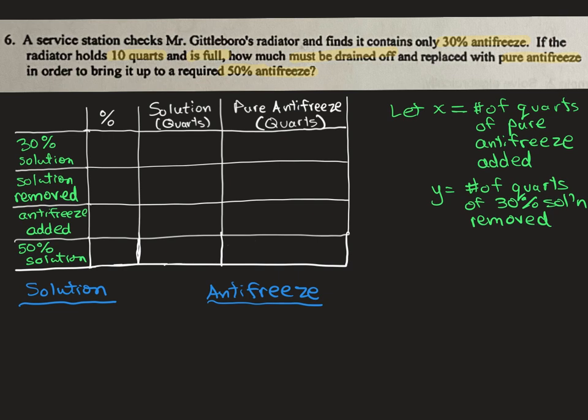So I set up a table here to kind of demonstrate the different stages of the antifreeze escapade. So 30% solution is kind of what we started with. The first column I have here is what that would be as a decimal, so 0.3. And the amount of solution we would have had would have been 10, because we started with 10 quarts. And the portion of that that would be pure antifreeze in the third column here would be 0.3 times 10, so three quarts of antifreeze originally.